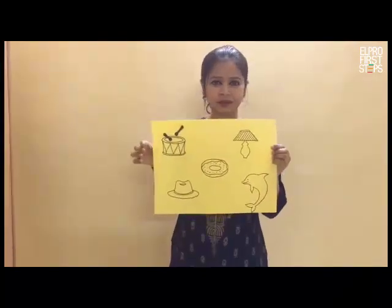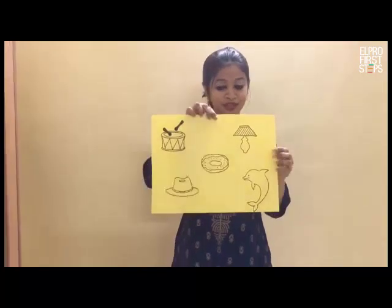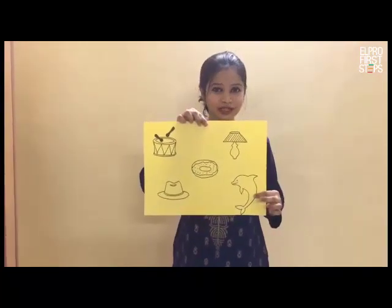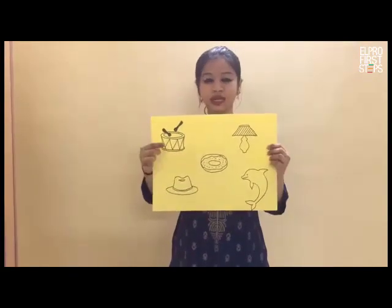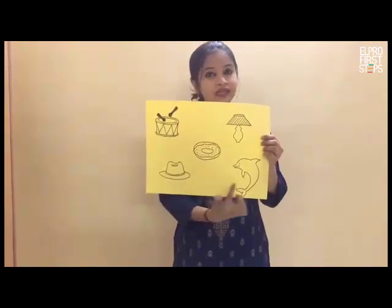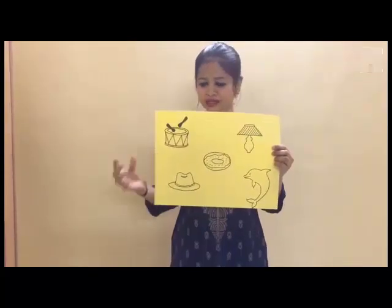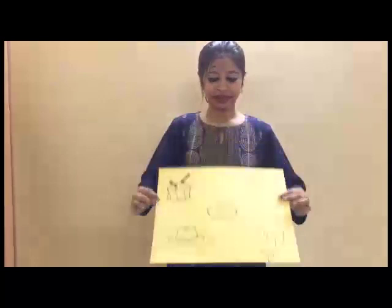We have a lamp. But will we color the lamp? No. Last we have a dolphin. Shall we color the dolphin? Yes. So we will color the drum, the donut and the dolphin. What we won't color is the hat and the lamp. I hope you all had fun learning about the letter D. Until next time, take care.